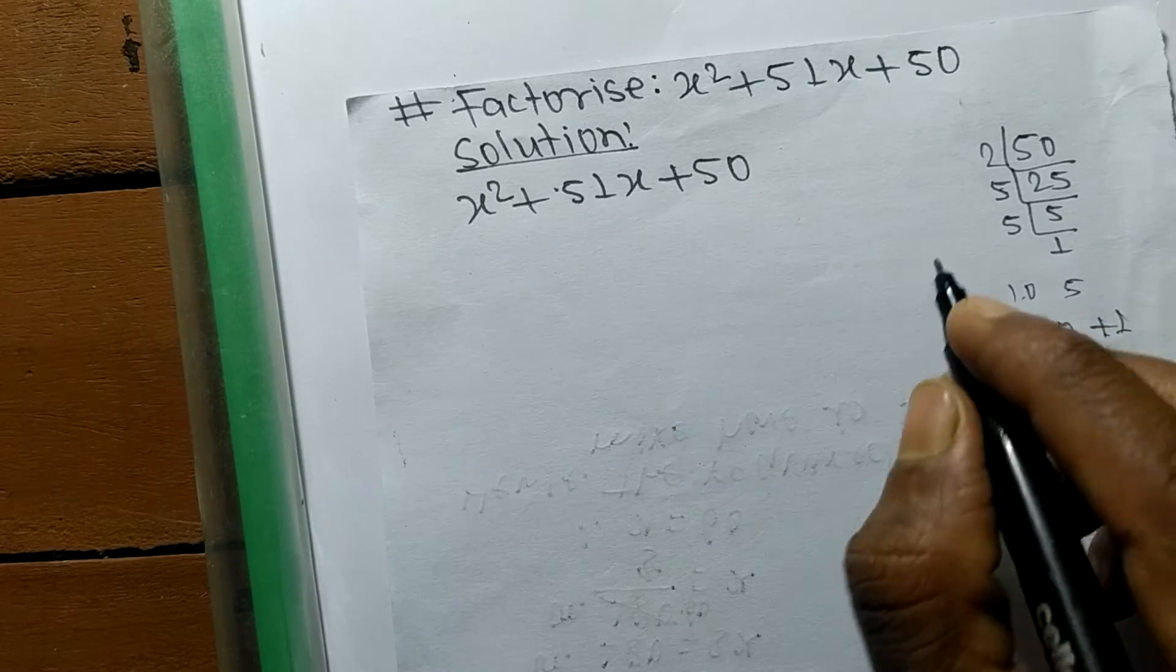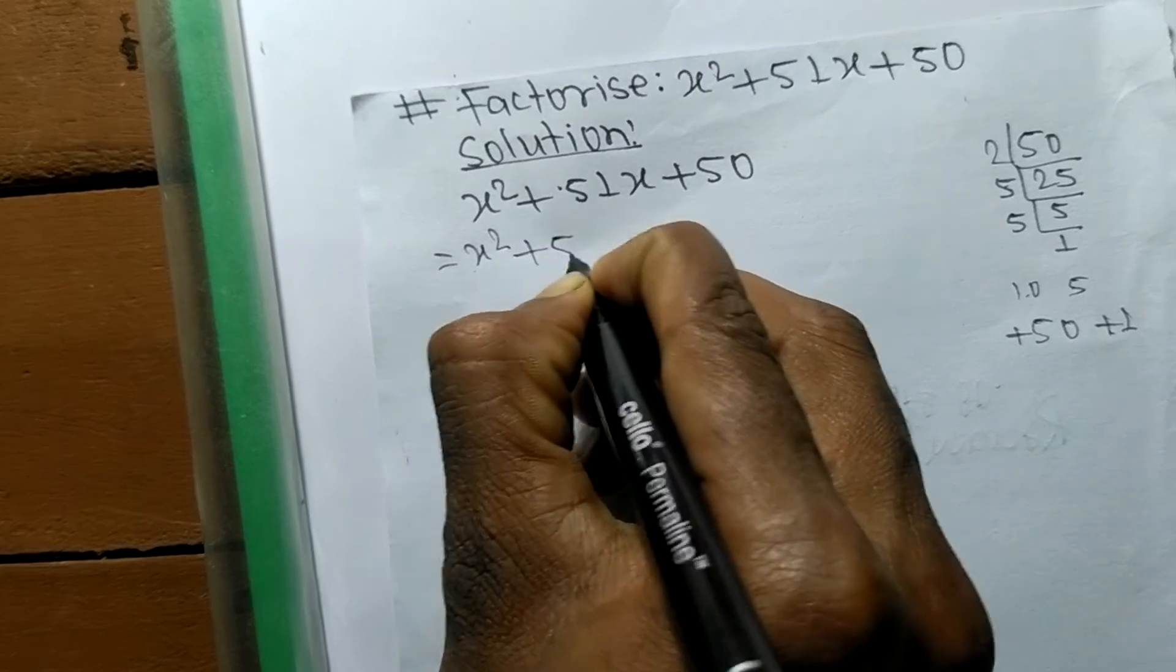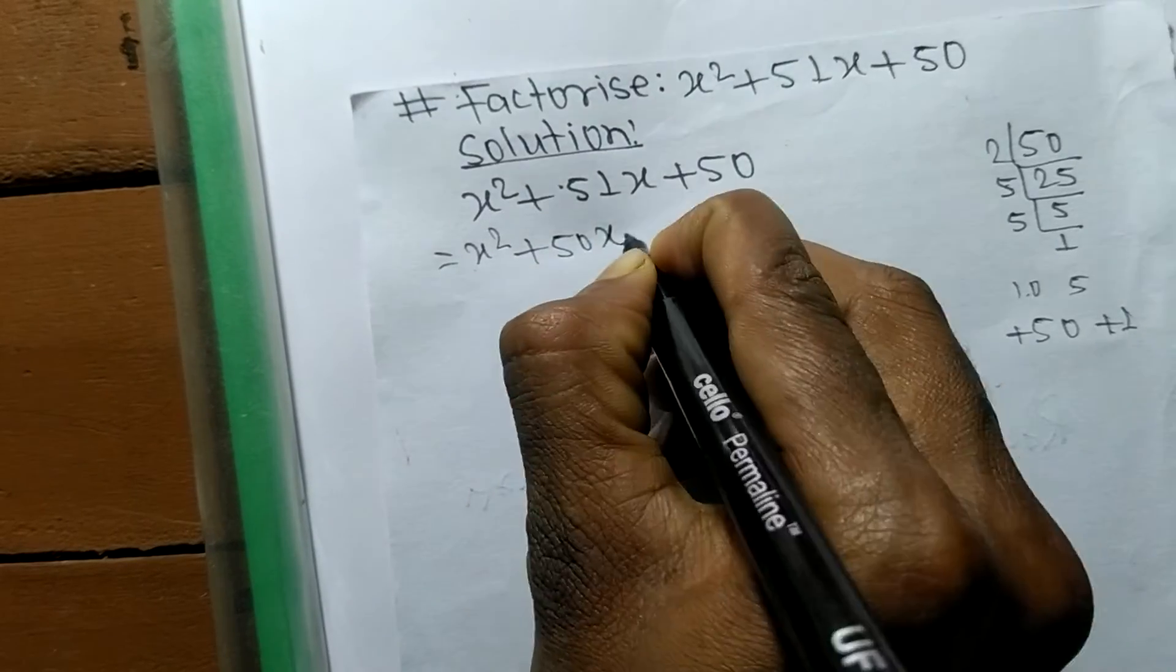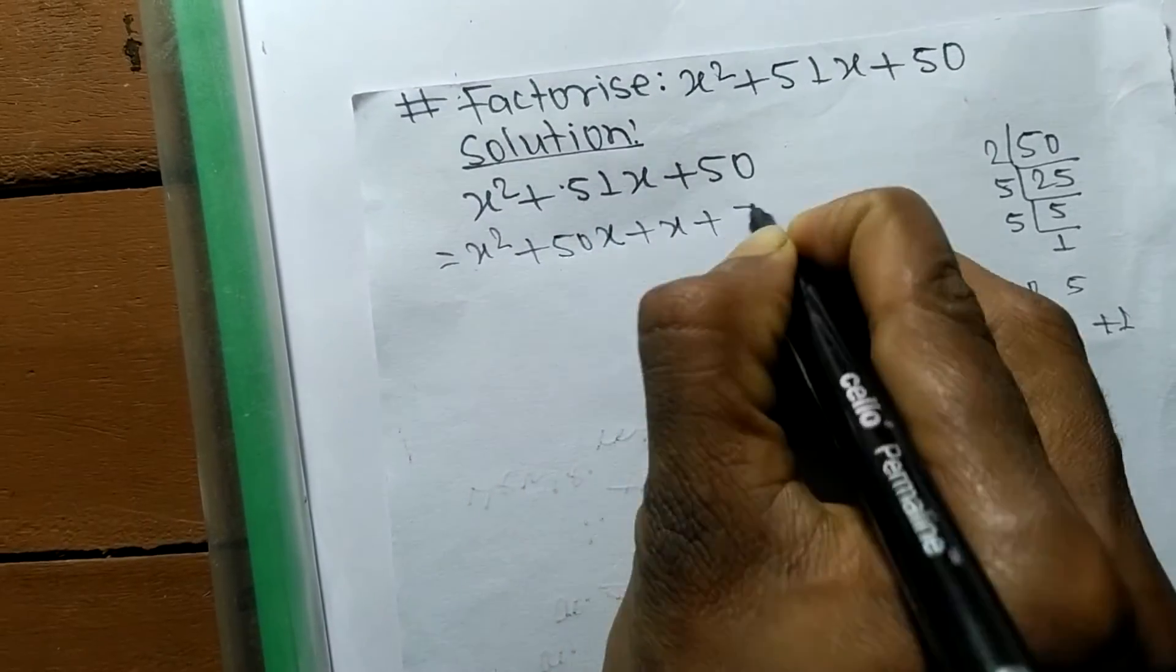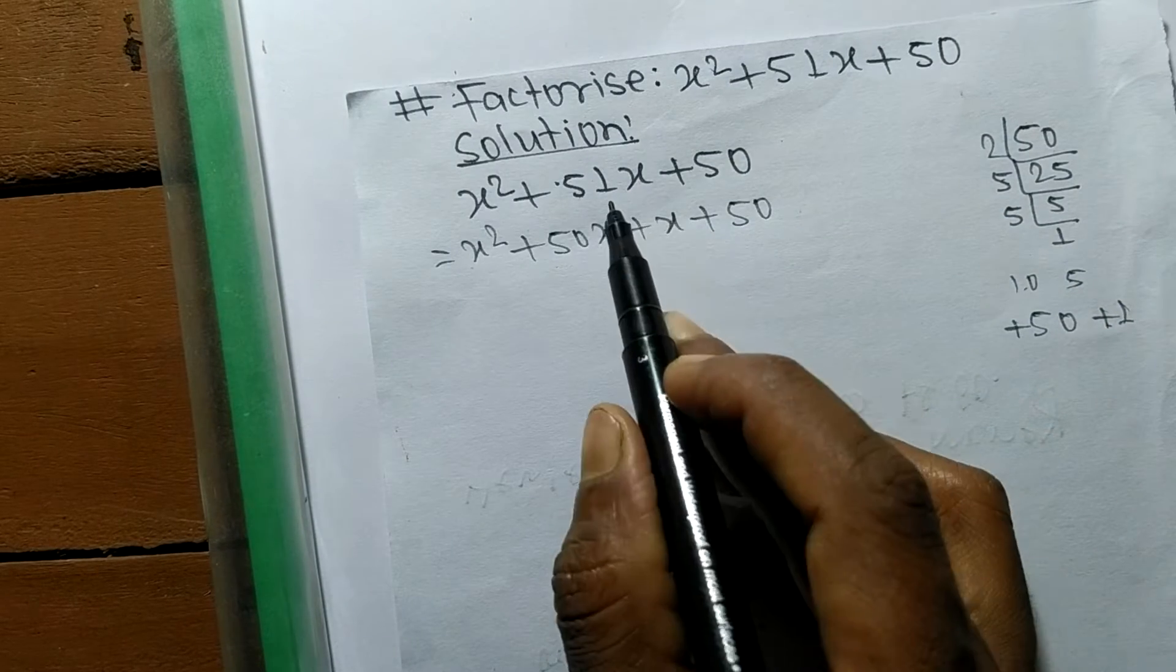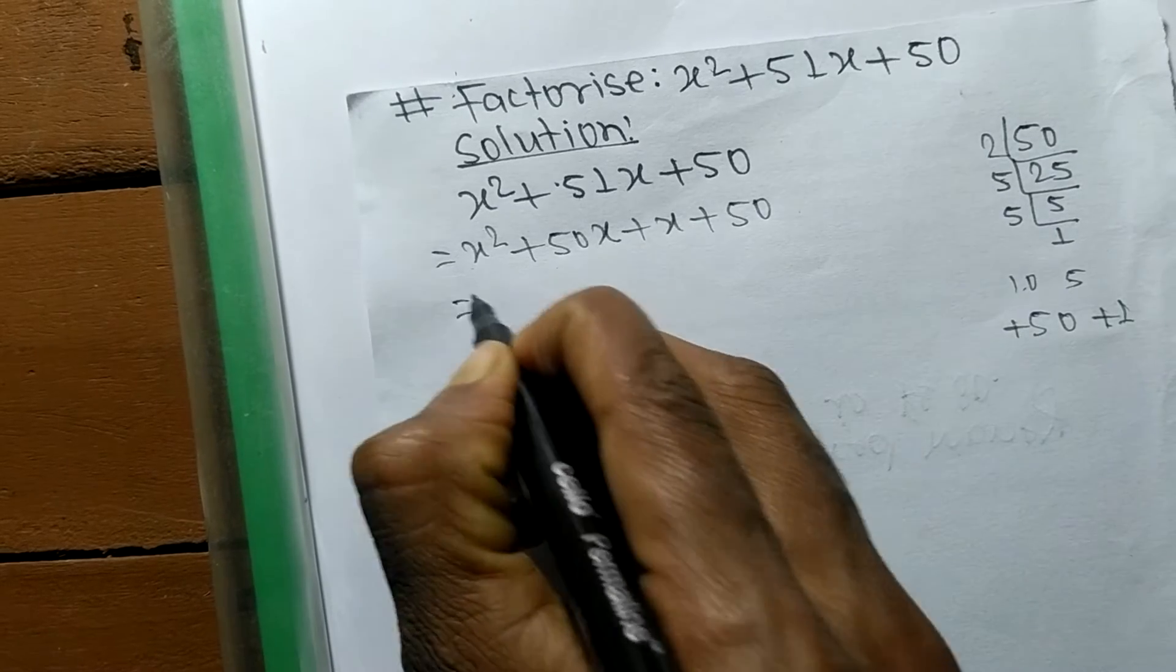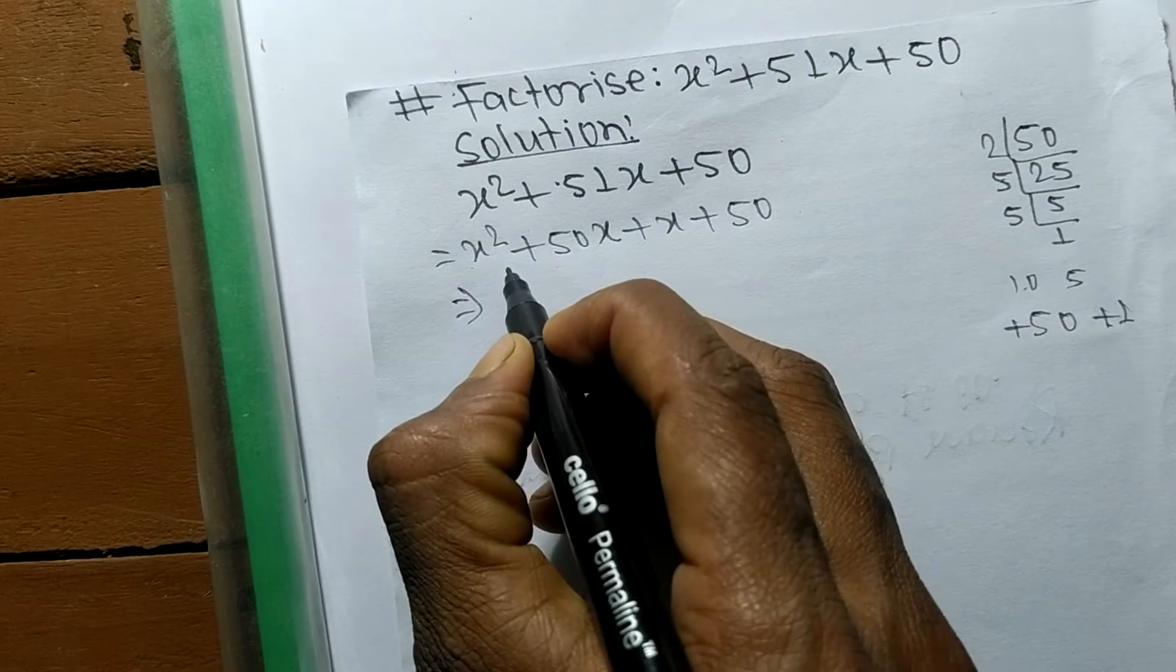So we can write it as x² + 50x + x + 50. 50x plus x equals 51x. Now we have to find the common factor in each pair of expressions.